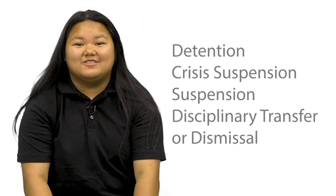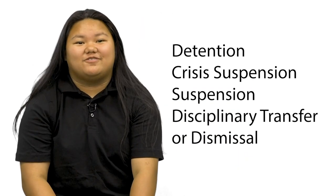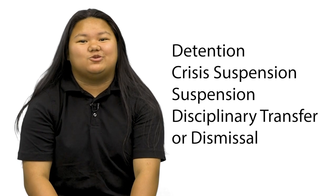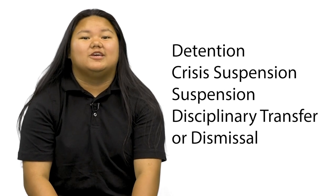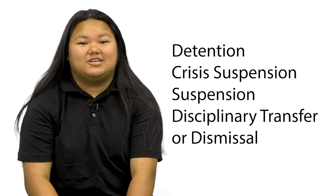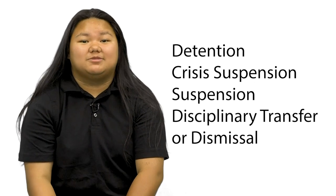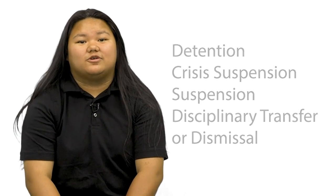What are the consequences? Depending on the severity of the offense, consequences could include one of the following: detention, crisis suspension, suspension, disciplinary transfer, or dismissal. Students possessing a firearm shall be dismissed from school for a minimum of one calendar year.